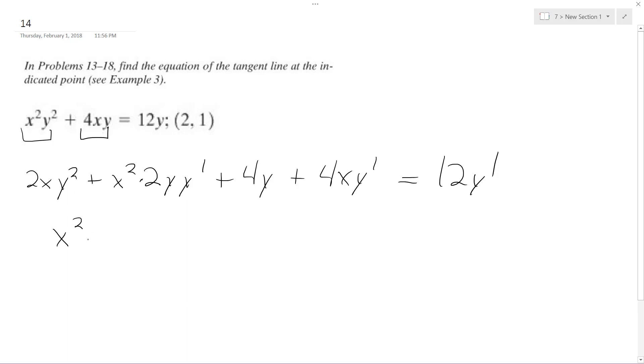So I'm going to have x squared times 2y prime plus 4xy prime minus 12y prime is equal to negative 2xy squared.